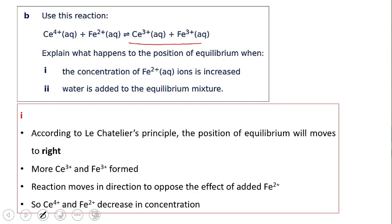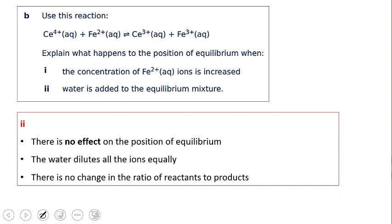What happens to the same reaction if more water is added? Water is not the main reactant or product — all species are aqueous. Adding water dilutes all ions equally, so it has the same effect on all reactants and products. Therefore, the ratio of reactants to products does not change, and there is no effect on the position of equilibrium.